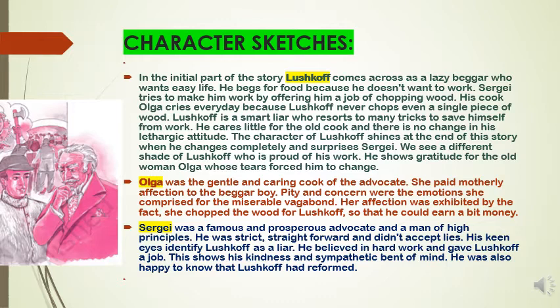In the initial part of the story, Lushkov comes across as a lazy beggar who wants an easy life. He begs for food because he doesn't want to work. Sergei tries to make him work by offering him a job of chopping wood. His cook, Olga, cries every day because Lushkov never chops even a single piece of wood. Lushkov is a smart liar who resorts to many tricks to save himself from work. He cares little for the old cook and there is no change in his lethargic attitude.